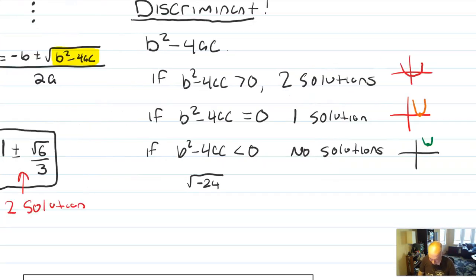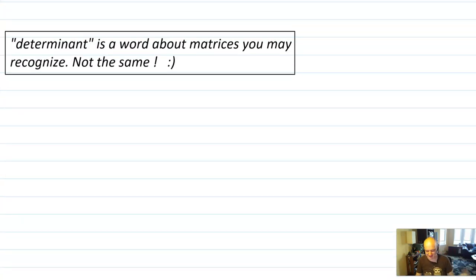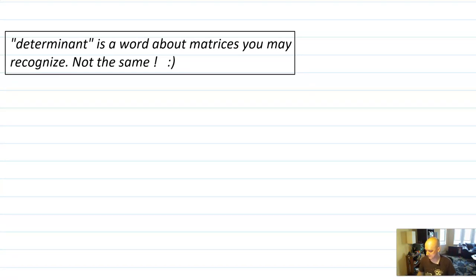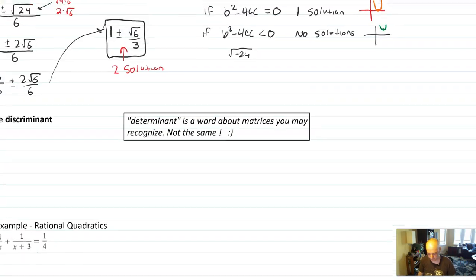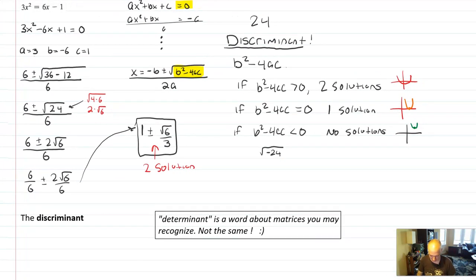The discriminant is a really quick check for what kind of solutions you should have. I use it a lot in graphing: a quadratic with two solutions crosses the x-axis twice, one with one solution just touches it, and one with no solutions misses entirely. So if I have a graph, I can check the discriminant to confirm the number of intercepts matches the expected number of solutions. Also worth noting: discriminant is different from 'determinant,' which is a matrix concept — just two similar-sounding math words.